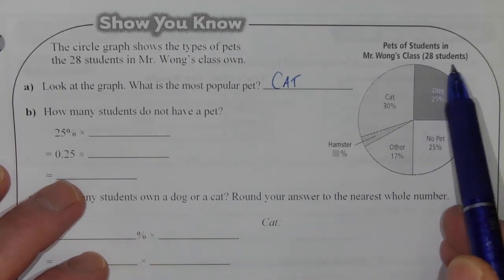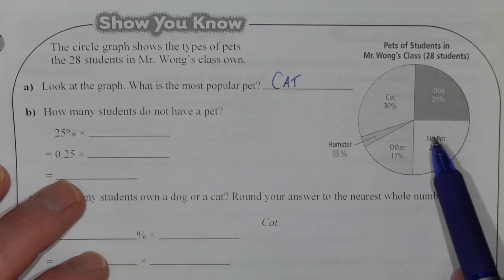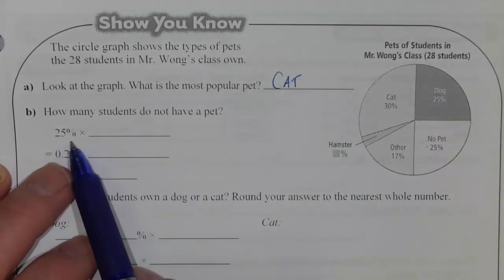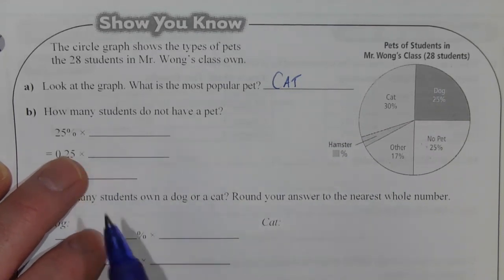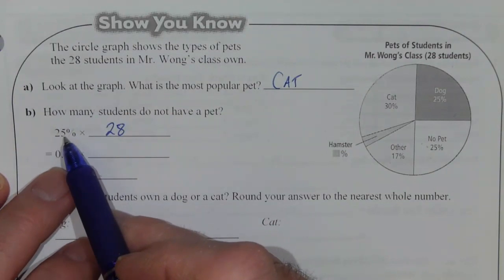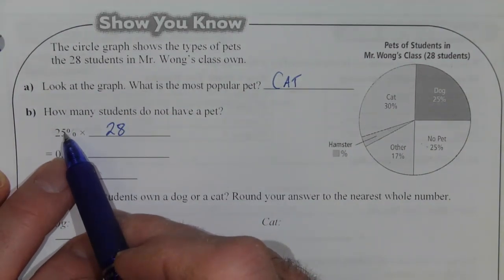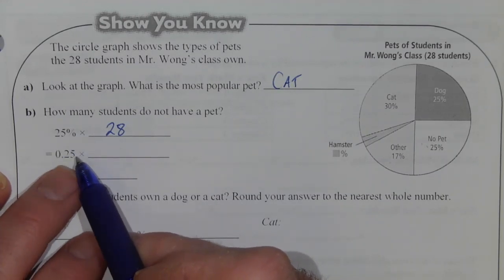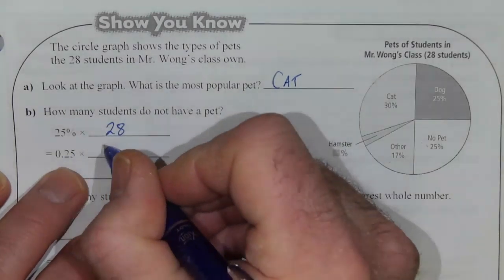But we know that the class size is 28 students, so it's 25% of the 28 students. So 25% of or multiply by 28 students. We can't use percentage as it is in the calculation, we have to convert it to a decimal. So we divide that by 100, and that we have 0.25 times 28,